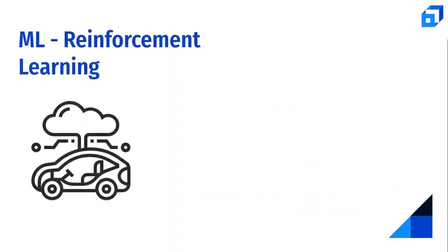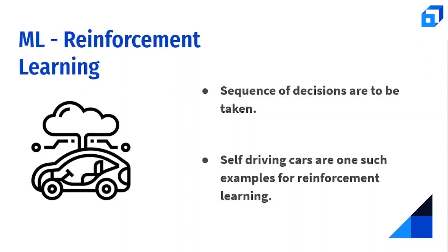In reinforcement learning, models are trained to make a sequence of decisions in an interactive or complex environment by using feedback from their own previous experiences. Models use trial-and-error methods — an example would be self-driving cars, where input data comes from a wide variety of sensors on the car. For more on machine learning, there is a dedicated video linked in the description.